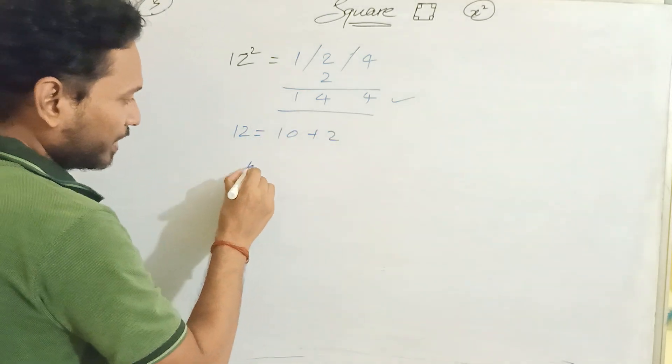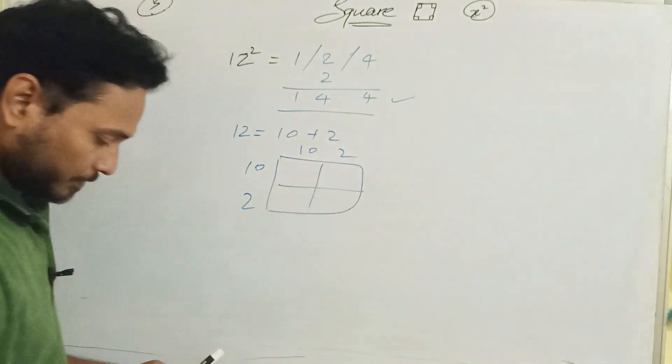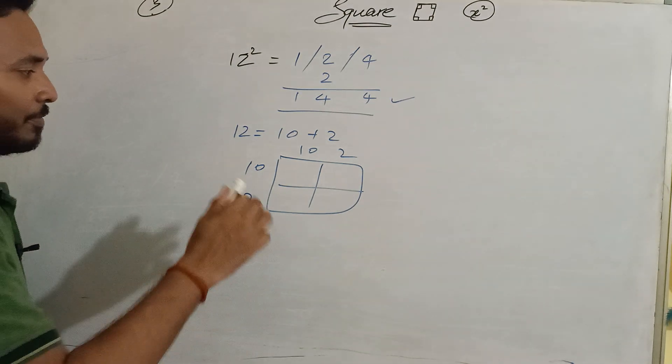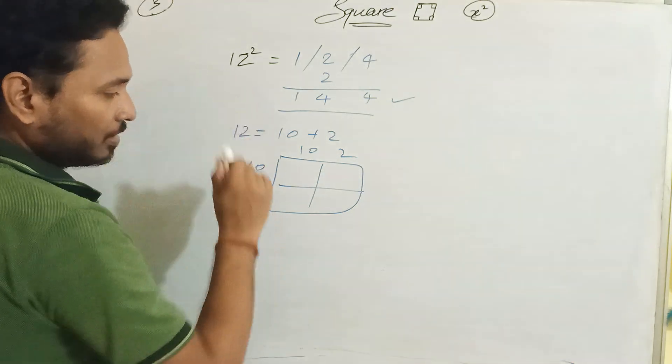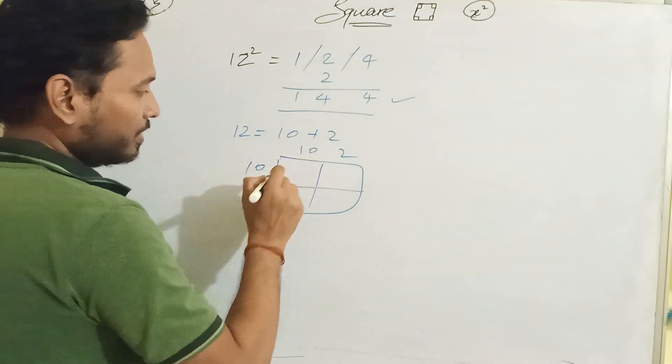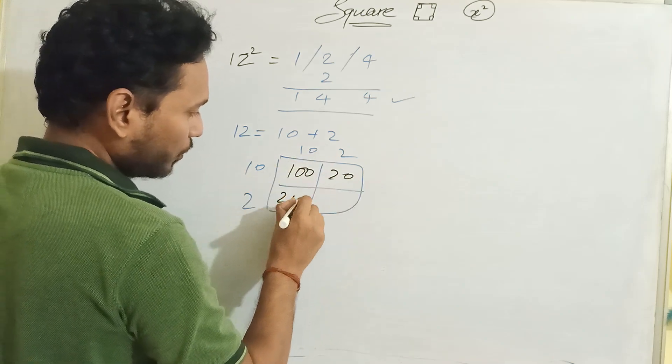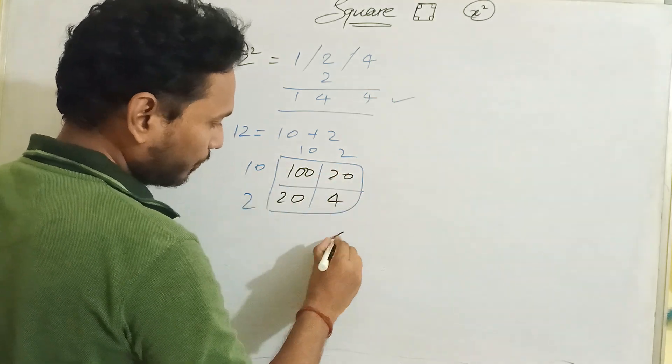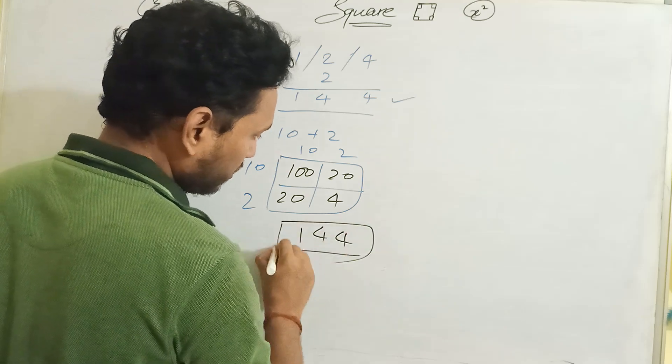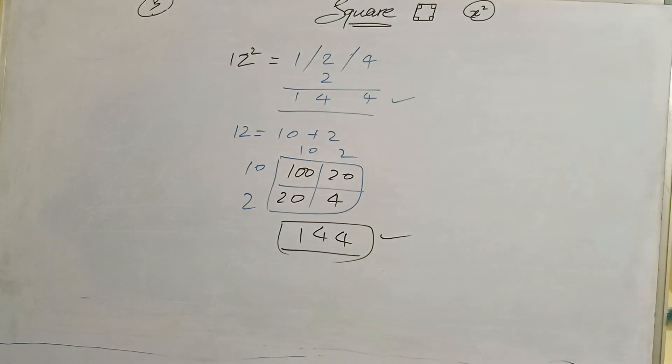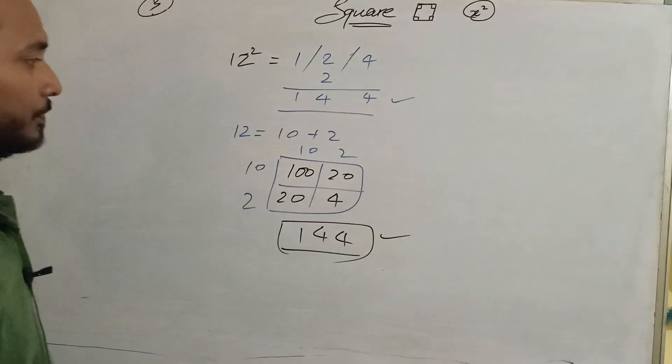Choose two numbers 10 and 10. After multiplication we will add it, then the result will come out. 10×10=100, 10×2=20, 2×10=20, 2×2=4. Added: 4, 2, 2, 4, 1. This is the answer, but this is the lengthiest method.